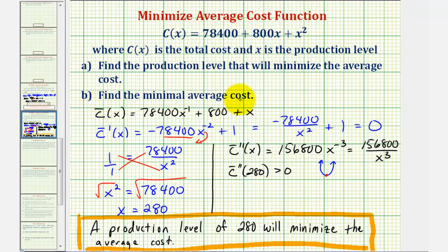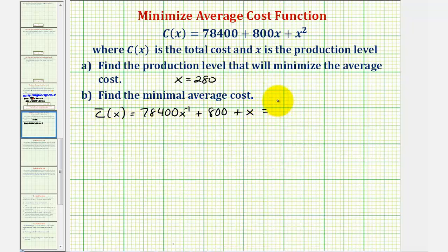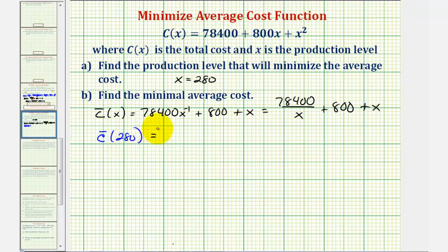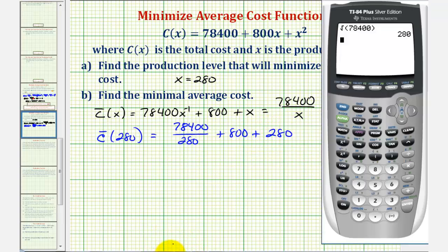For part B, to find the minimum average cost, we'll evaluate the average cost function when x equals 280. The average cost function is 78,400 divided by x plus 800 plus x. So the average cost when x equals 280 is 78,400 divided by 280 plus 800 plus 280. This sum equals 1,080, so the minimum average cost is 1,360 dollars.